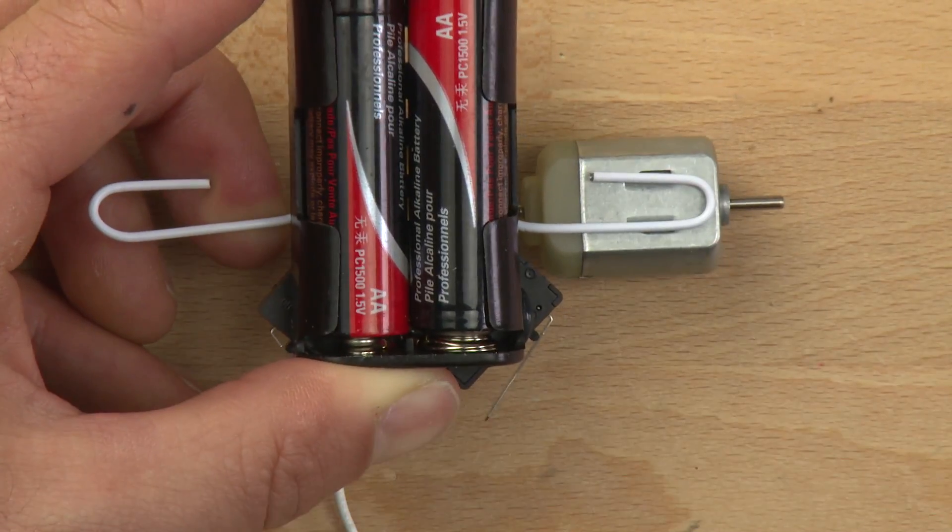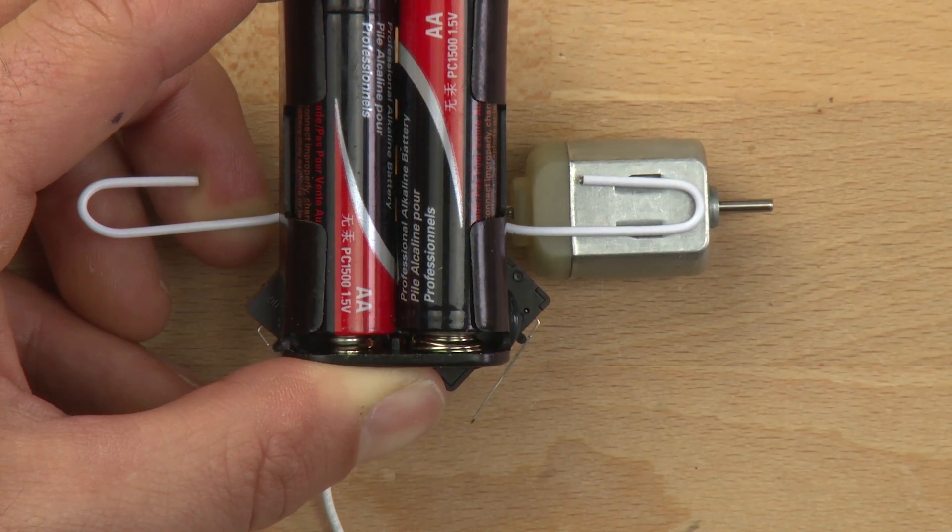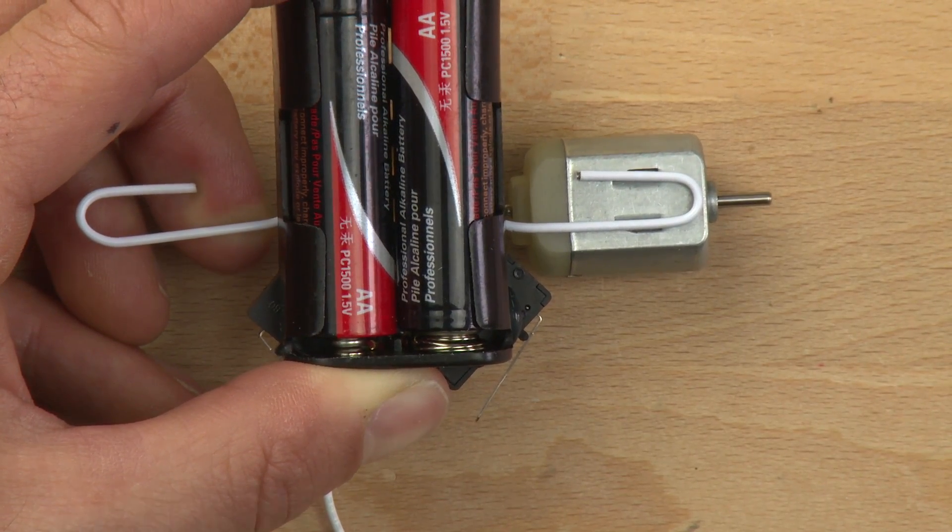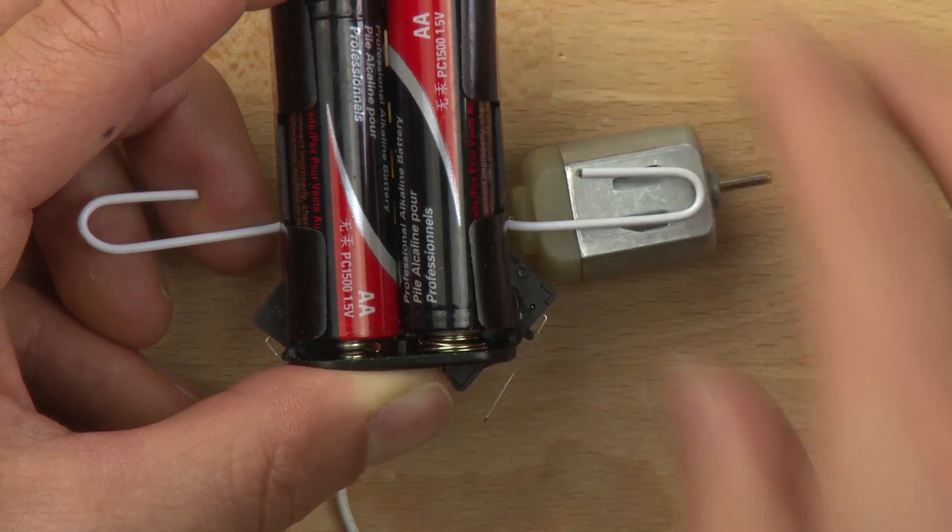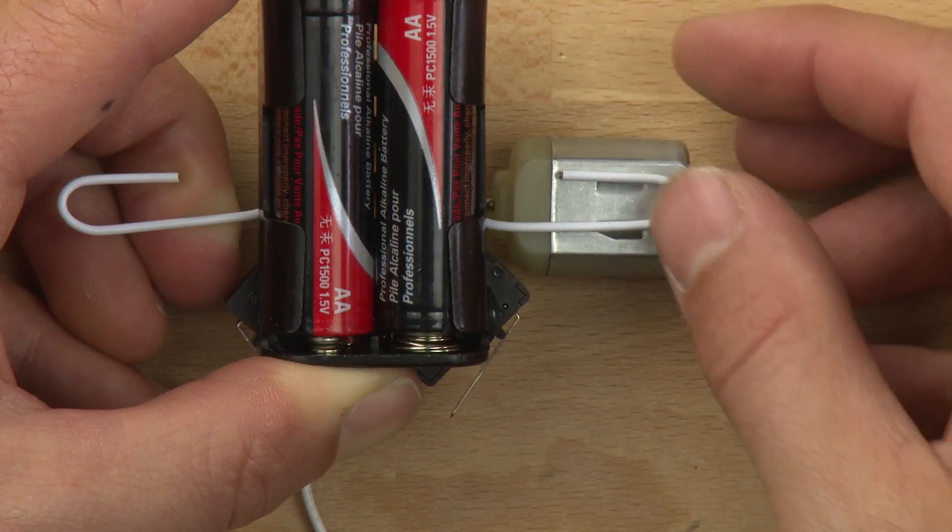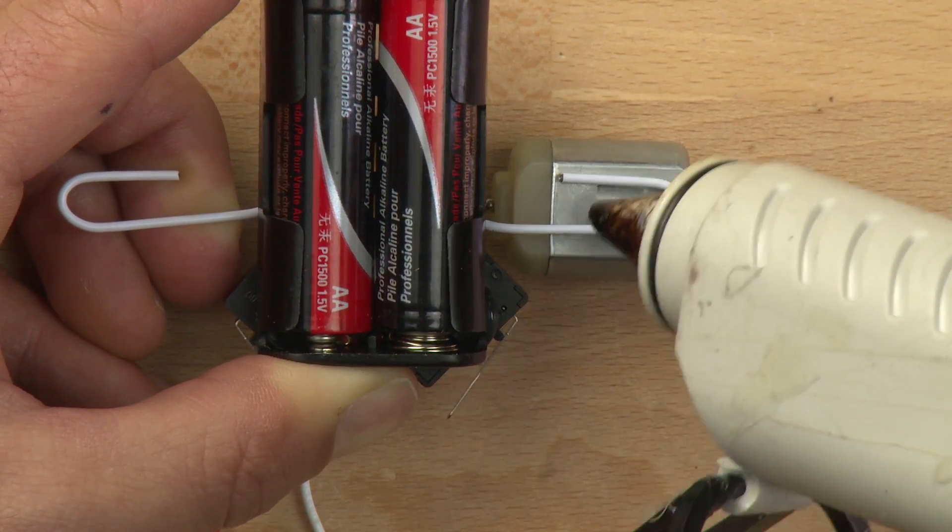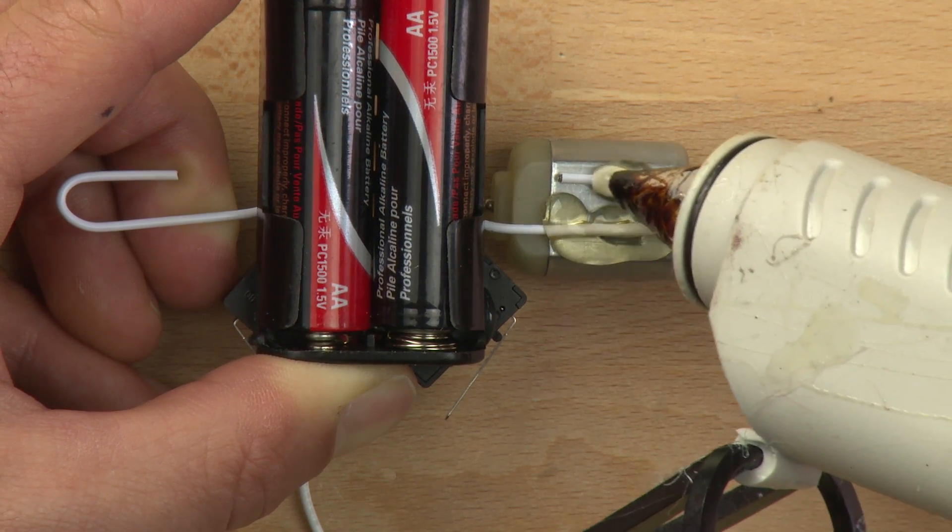We want to make sure that paper clip is in good contact with the back of the motor, because that's what's going to hold the motor in place. It's easy for these things to move around, so make sure you put hot glue on both sides of the paper clip.